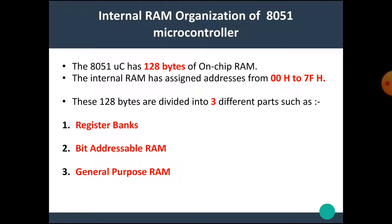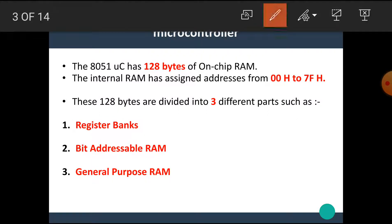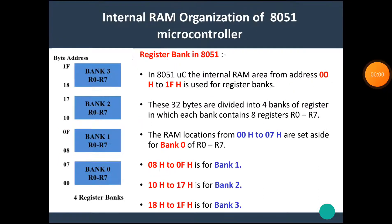In this video, we are going to study the internal RAM organization of the 8051 microcontroller. We have previously learned that the 8051 microcontroller has a total of 128 bytes of on-chip RAM. The internal RAM has assigned addresses from 00H to 7FH. These 128 bytes are divided into three different parts: register bank, bit addressable RAM, and general purpose RAM.